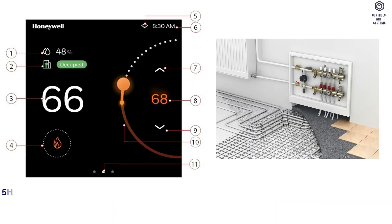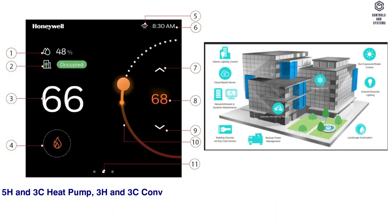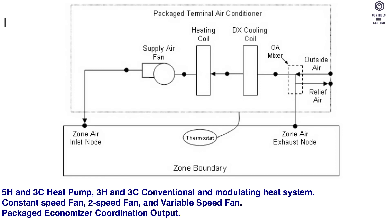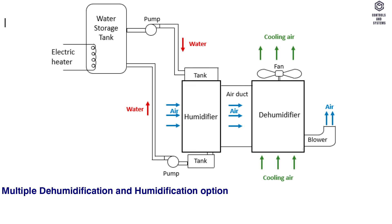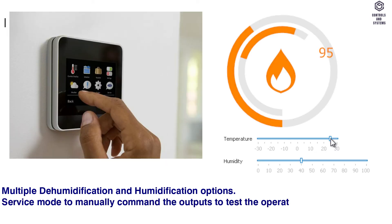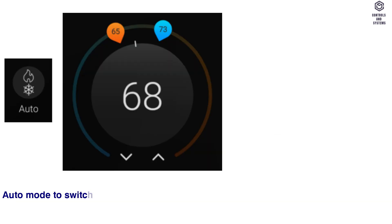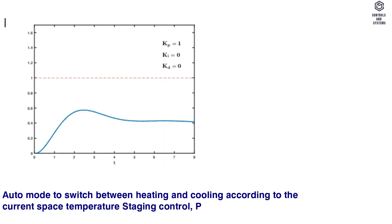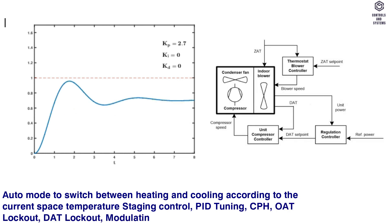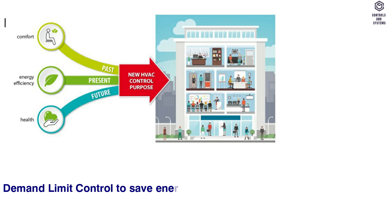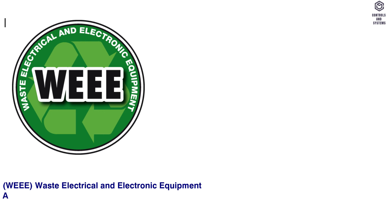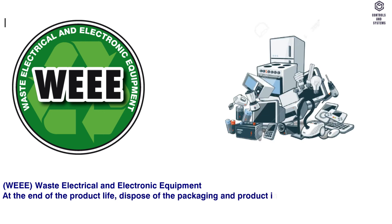Equipment control features: 5 heating and 3 cooling heat pump; 3 heating and 3 cooling conventional and modulating heat system. Constant speed fan, 2-speed fan, and variable speed fan. Packaged economizer coordination output. Multiple dehumidification and humidification options. Service mode to manually command outputs to test mechanical equipment. Auto mode to switch between heating and cooling according to current space temperature. Staging control, PID tuning, CPH, OAT lockout, DAT lockout, modulating control. Demand limit control to save energy. System switch options and smoke monitor. WEEE: at the end of product life, dispose of the packaging and product in an appropriate recycling center.